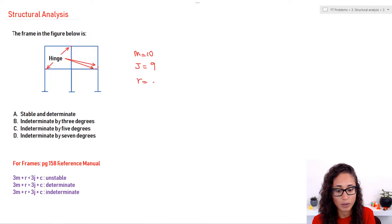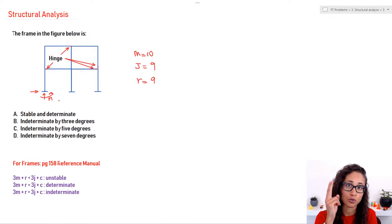The reactions, we have about nine as well. Because this is a fixed end, right? Fixed end, as you guys remember, has three reactions. We have the vertical force, horizontal force, and the moment. So here we have three, three, three, that gives you nine. So nine reactions, and then c. That's the tricky one.